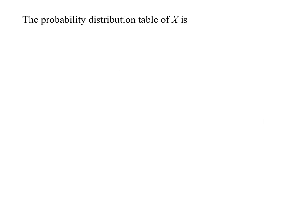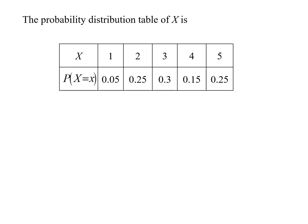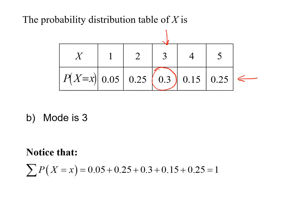The probability distribution table of x is represented using the table. To determine the mode, we refer to the probabilities — the highest value of probability represents the mode, so the mode equals 3. We can use the summation of the probabilities to check our answer; the summation equals 1. Thank you, that's all for Lecture 1.